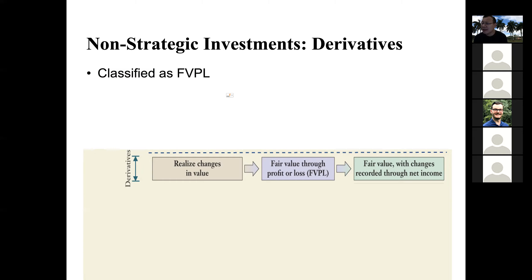In the textbook, I think it said there are exceptions for hedge preparers. But for the purpose of this course and this chapter, I don't want to make it that complicated. I'm not going to test you on those exceptions. So for now, just know that derivatives are classified as FVPL.